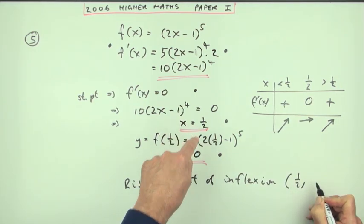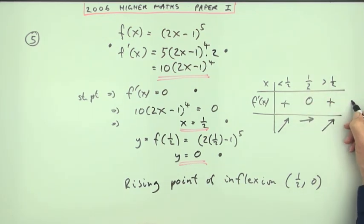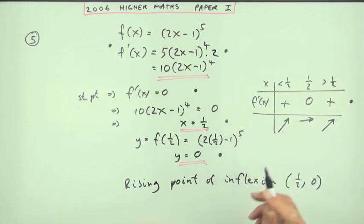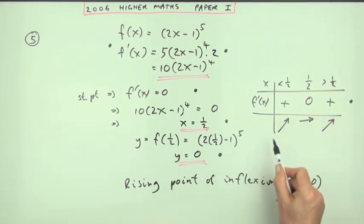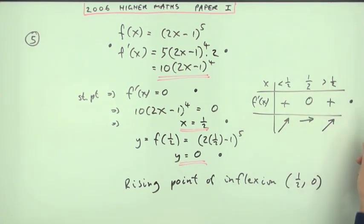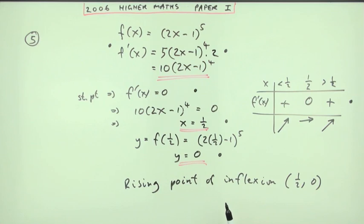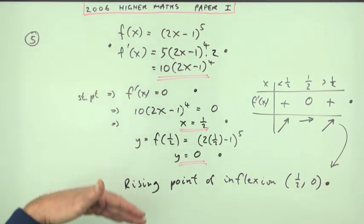So the conclusion is a rising point of inflection at (1/2, 0). Those are the final two marks: one for the nature table and one for the final statement. You get no marks for using the second derivative alone here, because you'd still have to revert to a nature table to find its type anyway. And there are the seven marks — quite a nice, quick little question.